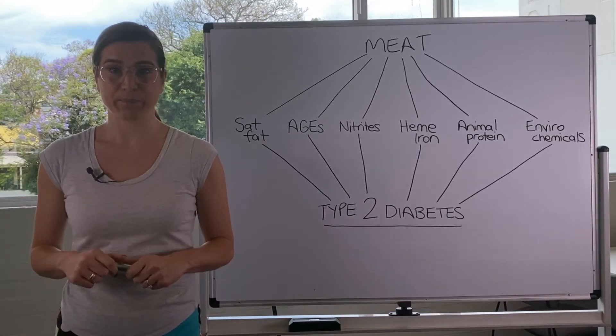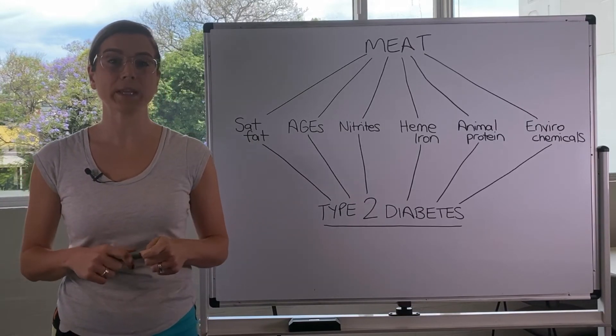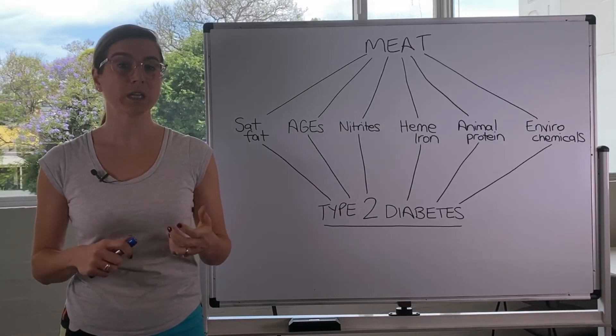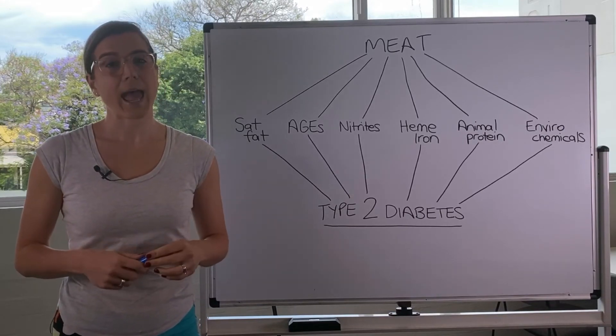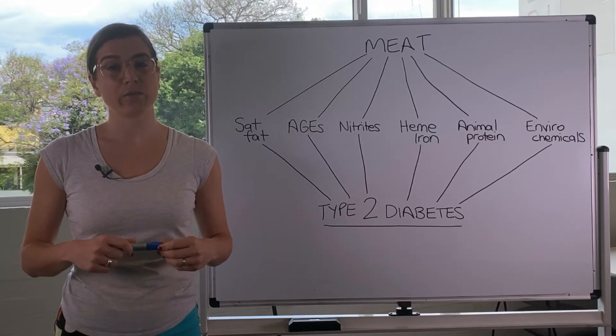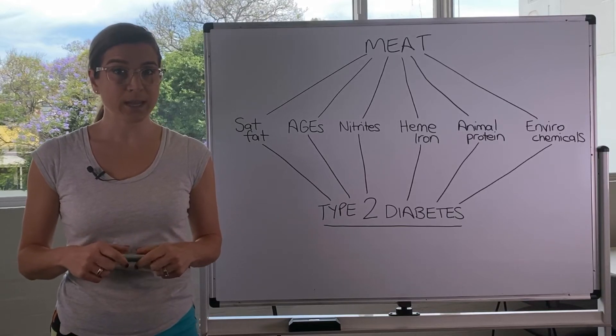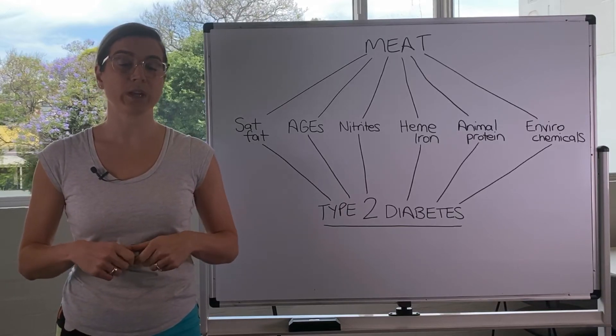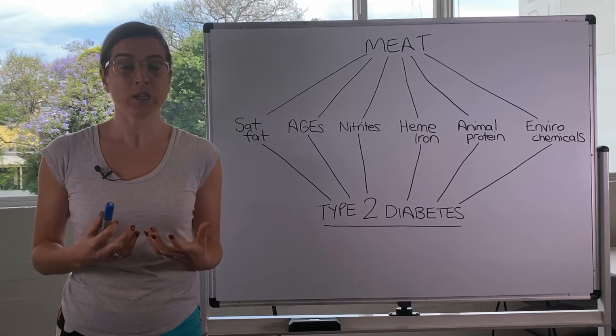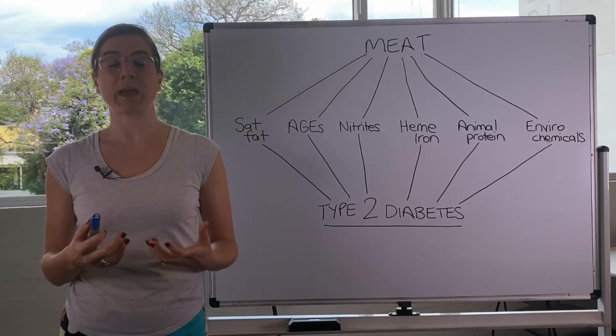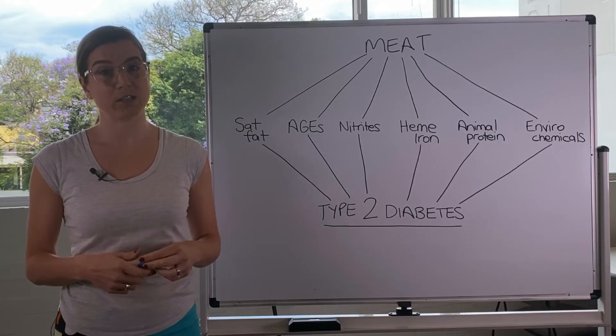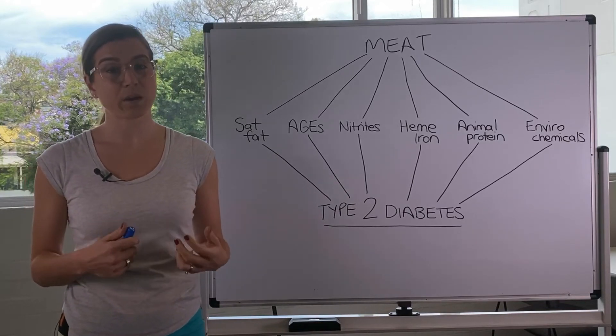Nitrites. So nitrites are commonly used in meat, particularly processed meats, as a preservative. And these nitrites are converted to nitrosamine and nitrosamine will trigger free radicals in the body, which again will lead to oxidative stress, inflammation and over time this can lead to insulin resistance and type 2 diabetes.